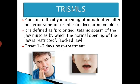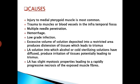Onset is 1 to 6 days post-treatment. Causes for trismus: injury to the medial pterygoid muscle is most common. Other causes include trauma to muscles or blood vessels in the infratemporal fossa, multiple needle penetrations, hemorrhage, and low-grade infection. Excessive volume of solution deposited into a restricted area produces distension of tissues leading to trismus. Local anesthesia solution into which alcohol or cold sterilizing solutions have diffused produces irritation potentially leading to trismus. Local anesthesia also has slight myotoxic properties leading to progressive necrosis of exposed muscle fibers.